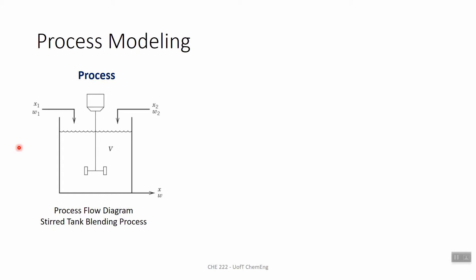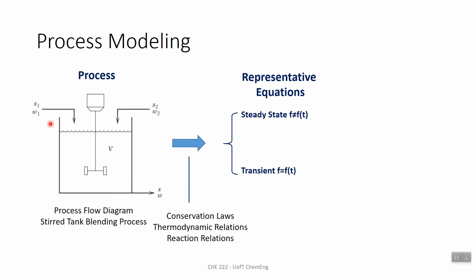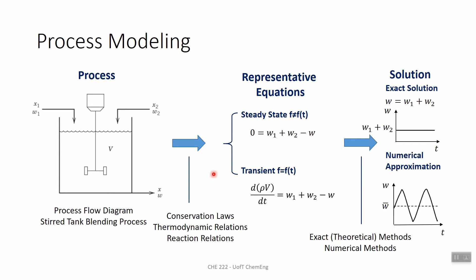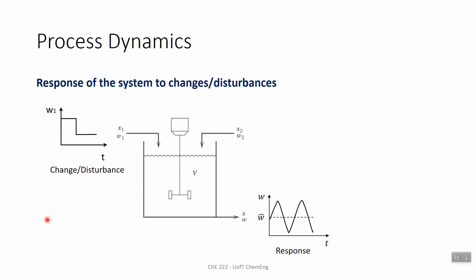The first step is process modeling, which is basically representation of a process with mathematical equations. This can be done for two different states: steady state and transient state. Once we have these mathematical equations, the next step is to solve them using exact methods or numerical methods. If we have an equation for the transient state of a system, we can get into process dynamics — the response of the system to changes or disturbances with respect to time. For example, if an input variable varies with time like a step function, we study how the output of the system responds.